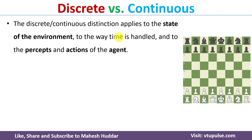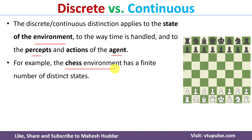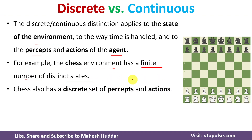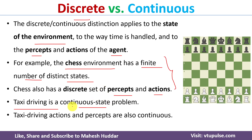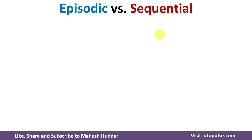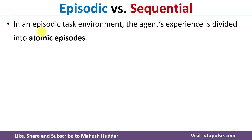The next property is discrete versus continuous, determined based on the state of the environment, the percepts received by the agent, and the actions executed. In chess, there is a finite number of distinct states, the agent perceives a discrete number of percepts, and executes a discrete number of actions — so chess is a discrete environment. In automated taxi driving, the environment, percepts, and actions are all continuously changing, so it is a continuous environment.